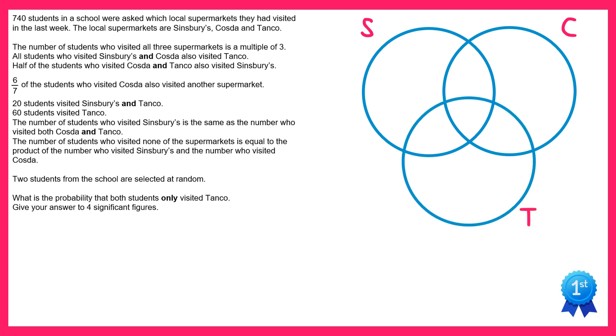Now we'll work through the information and see if we can use it to add information to the Venn diagram. So we'll start with this bit here, the number of students who visited all three of the supermarkets is a multiple of three. If they visited all three of the supermarkets they must be right in the centre of the Venn diagram, and if it's a multiple of three we can write 3n in there since 3n will always be a multiple of three as long as n is an integer.